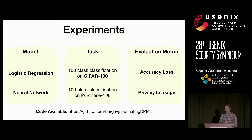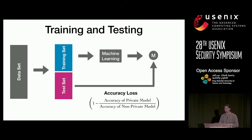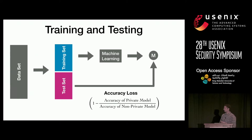Moving on to the experiments: we train logistic regression and neural network models for 100-class classification tasks, one on the CIFAR-100 dataset and the other on the Purchase-100 dataset, and we evaluate two metrics—accuracy loss and privacy leakage—to examine the utility-privacy tradeoff. Due to time constraints, I'll go into the details of the CIFAR-100 results. We split the dataset into training and test sets, train the model on the training set, and evaluate accuracy loss on the test set relative to the non-private model. An accuracy loss of zero means the model is as good as the non-private model, and a loss of one means it's not learning anything.